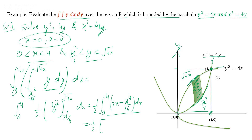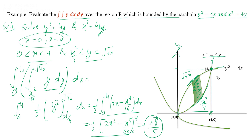Taking the integration with respect to x, we get (1/2) times [2x squared minus x to the power 5 upon 80], applying the limit from 0 to 4. In that way we can easily evaluate the integration.